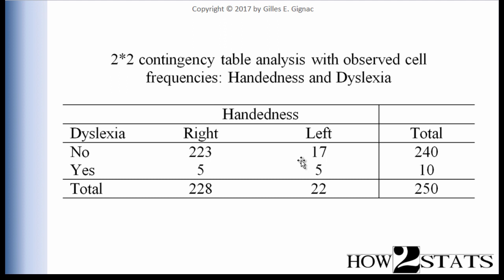All of these analyses are contingency table analyses. Now, an extra piece of information I have here that you may not have come across before are the marginal cell totals, or marginal frequencies. We have 228 people who are right-handed in the whole sample — regardless of dyslexia status — and 22 people who were left-handed. Far fewer people were left-handed than right-handed. We call these marginal cell frequencies.